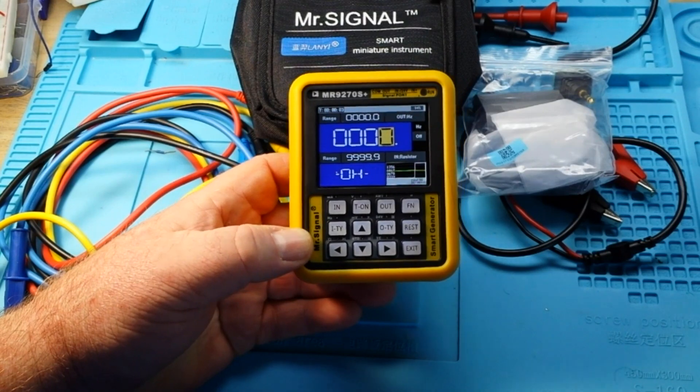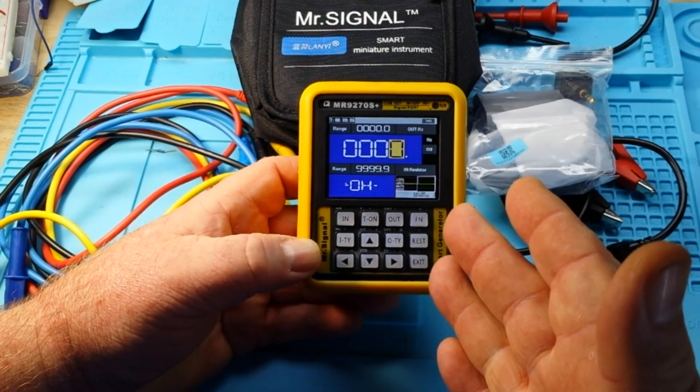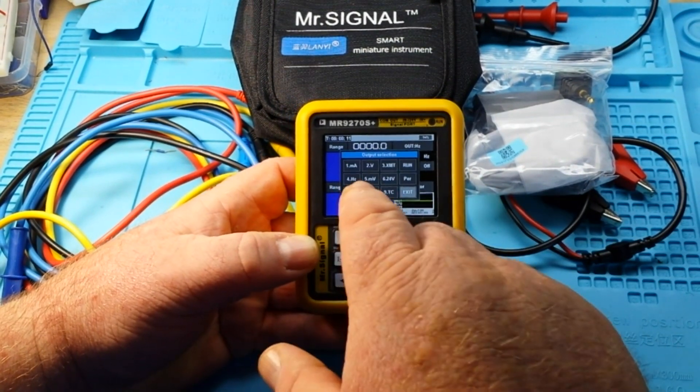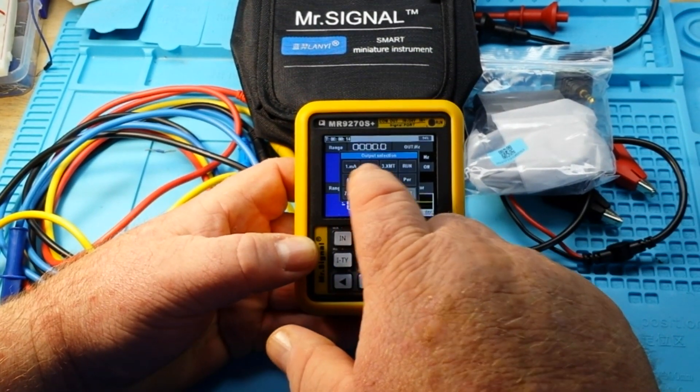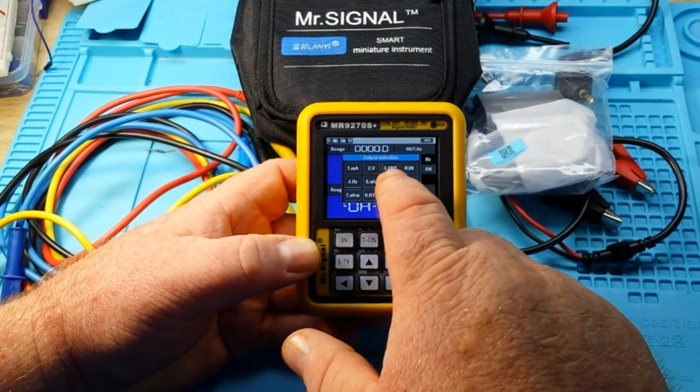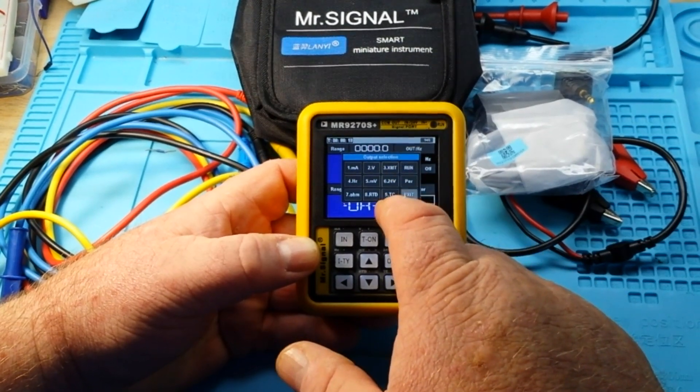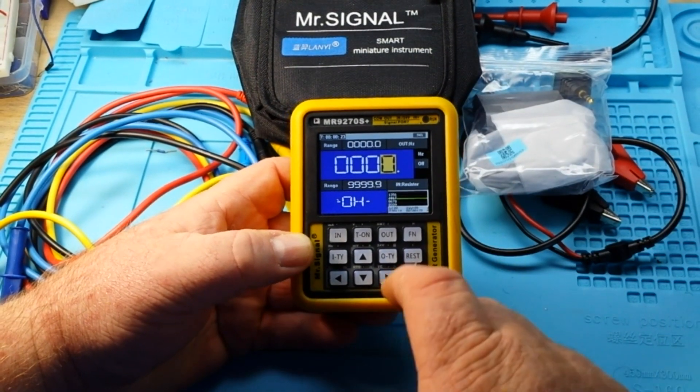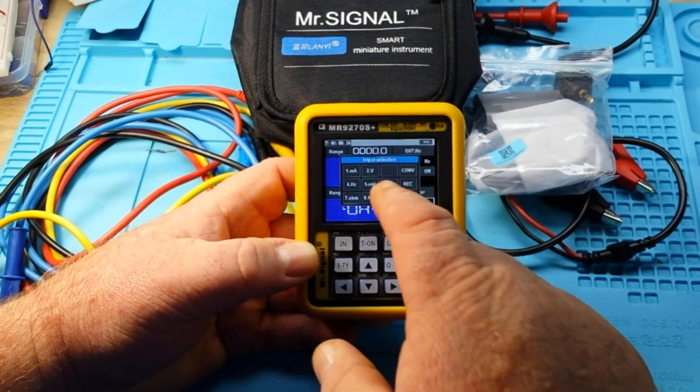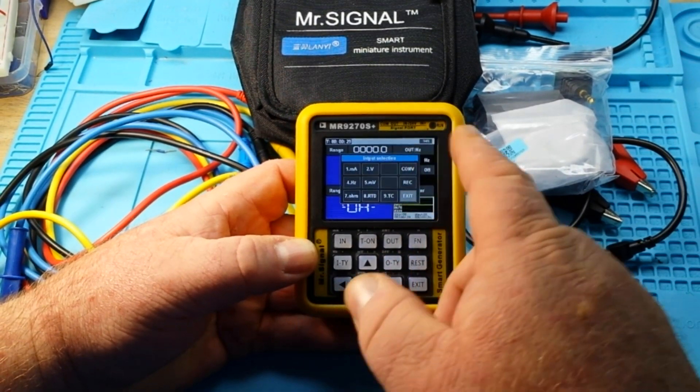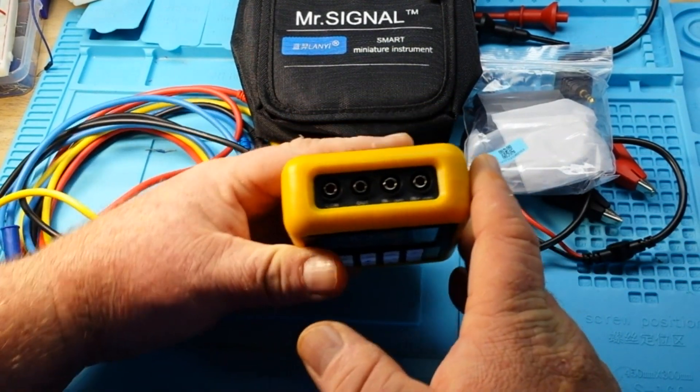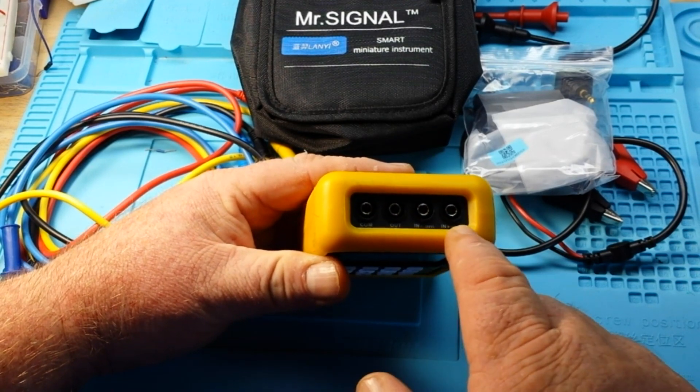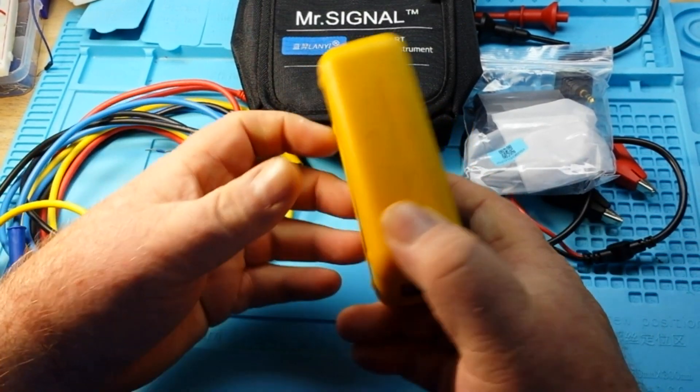This is a bunch of different tools kind of put together in a really nice little package. Now it is a function generator, so to speak. If I press the out here you can see it'll output milliamps, hertz, ohms, volts, millivolts, 6.24, all kinds of stuff. And then it also has inputs where we can read milliamps, hertz, all that stuff because it has common out and in.